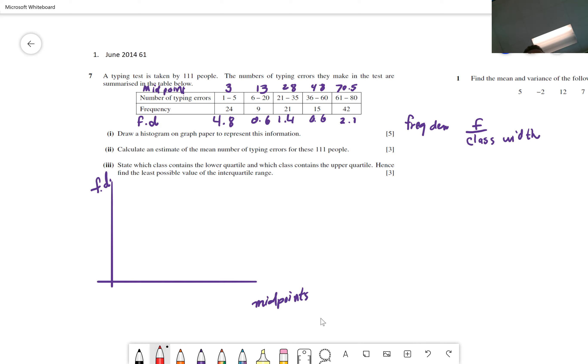Now I'm going to use midpoints. 1 plus 5 is 6, 6 divided by 2 is 3. So I'm going to use 3 to represent this class. 6 plus 20 is 26, divided by 2 is 13. 21 plus 35, divide that by 2, that's 28. 36 plus 60, divide that by 2, that's 48. And 61 plus 80 divided by 2, that's 70.5.